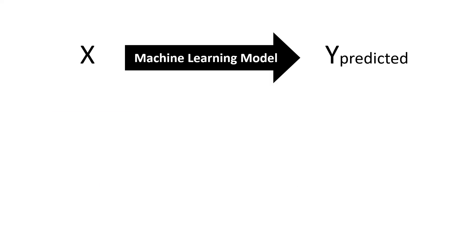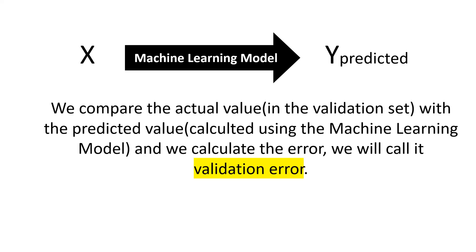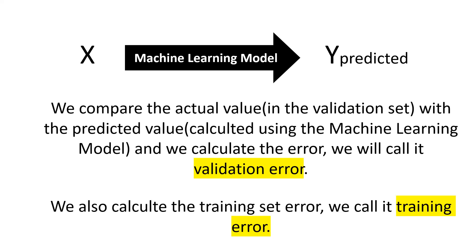The machine learning model is a kind of mapping between the features and the labels, where we train a portion of the dataset. After that, we compare the actual value in the validation set with the predicted value calculated using the machine learning model, and we calculate the error called the validation error. We also calculate the training set error, called the training error. Comparing these two kinds of errors will help us identify if we have underfitting, overfitting, or a good fit.